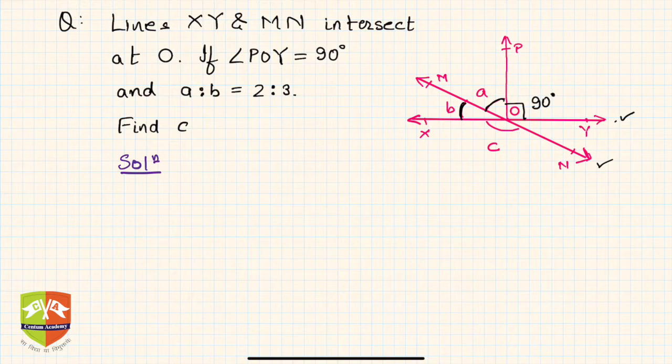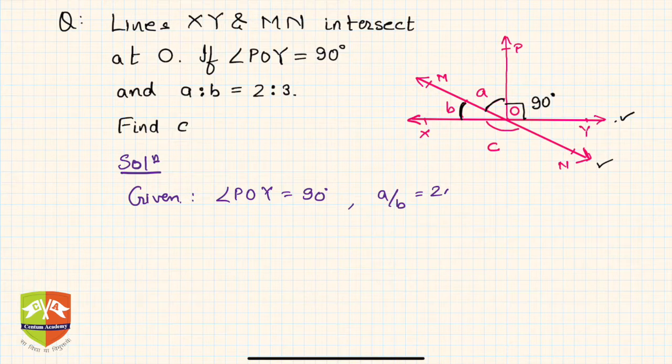What's given? Let's first write down: angle POY is equal to 90 degrees and a/b is 2/3. We don't really mention those which are pretty obvious, like MN being a line and XY being a line.